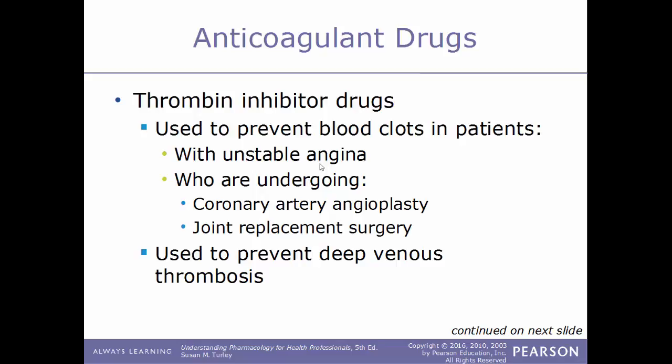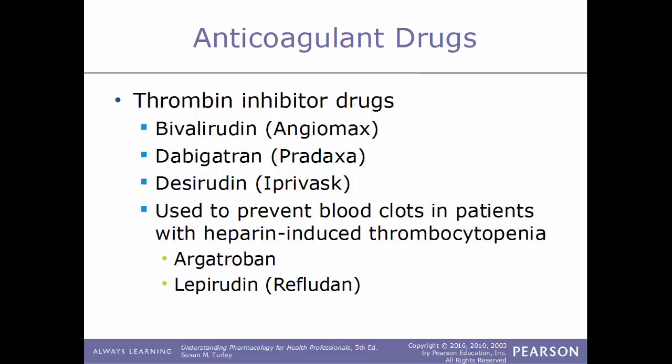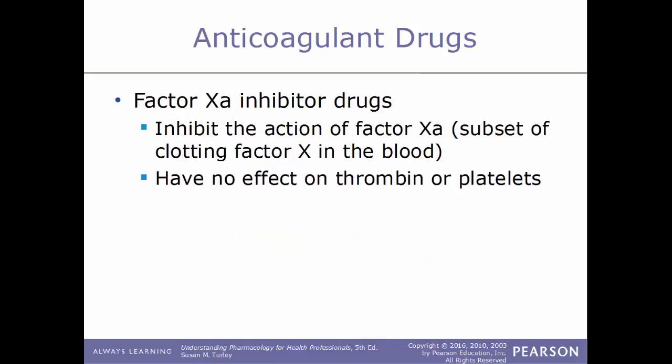Examples of thrombin inhibitors include bivalirudin (trade name Angiomax), dabigatran (trade name Pradaxa), and desirudin (trade name Iprivask). Some thrombin inhibitors are used to prevent blood clots in patients with heparin-induced thrombocytopenia, which is a deficiency of platelets in the blood. Examples of these include argatroban and lepirudin, which is sold under the trade name Refludan.